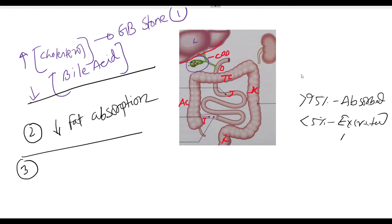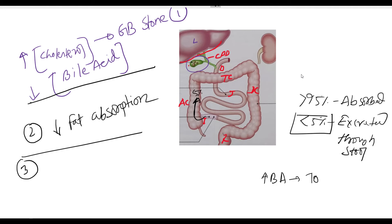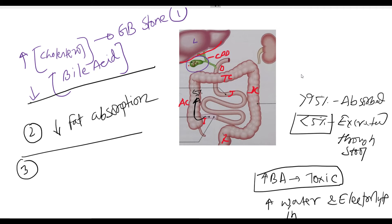That means only 5 percent of bile acid passes from the small intestine into the large gut. But in the case of ileal resection, a higher amount of bile acid passes into the large gut. In the large gut, this high amount of bile acid is toxic. These toxic bile acids increase the secretion of water and electrolytes into the gut lumen, and this high amount of water and electrolytes causes watery diarrhea. This is consequence number three — watery diarrhea.